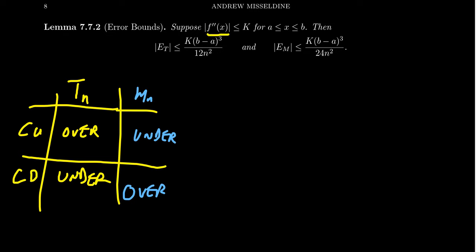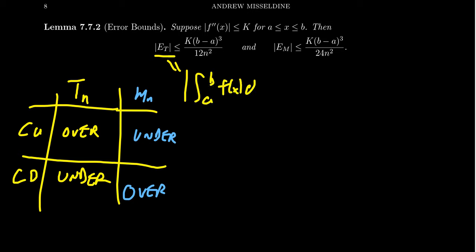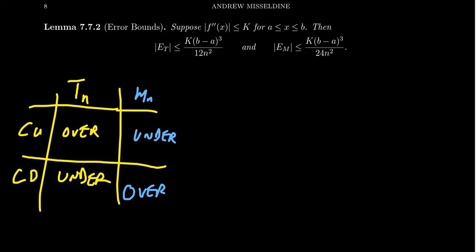Let's consider the second derivative of our function f. If the absolute value of the second derivative is bounded above by some value k while x lives between a and b — where a and b are the left and right bounds of our integral — it can be shown that the error associated with the trapezoid rule, that is the absolute value of the integral from a to b of f(x)dx minus Tn, is going to be at most k times (b minus a) cubed over 12n squared. Here b and a are the bounds of the integral, k is the bounding value on the second derivative which measures concavity, and n is the number of subdivisions used.